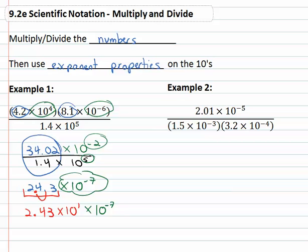which we can use our exponent properties on to combine the tens together. Our final answer is 2.43 times ten to the, adding exponents, negative sixth power.